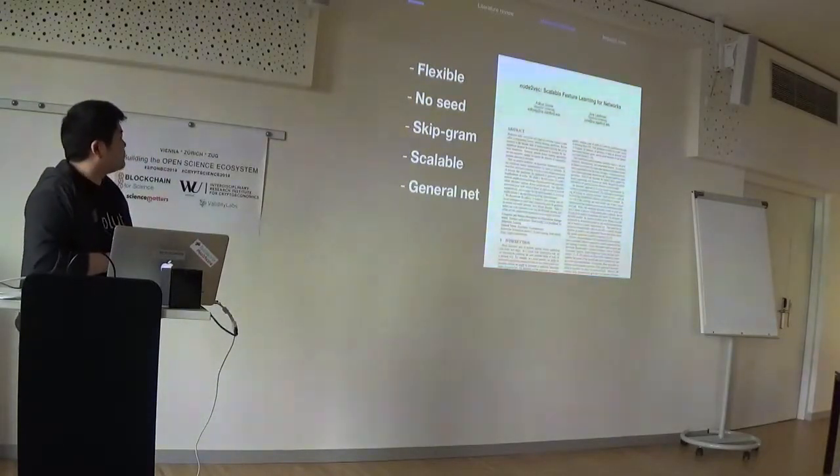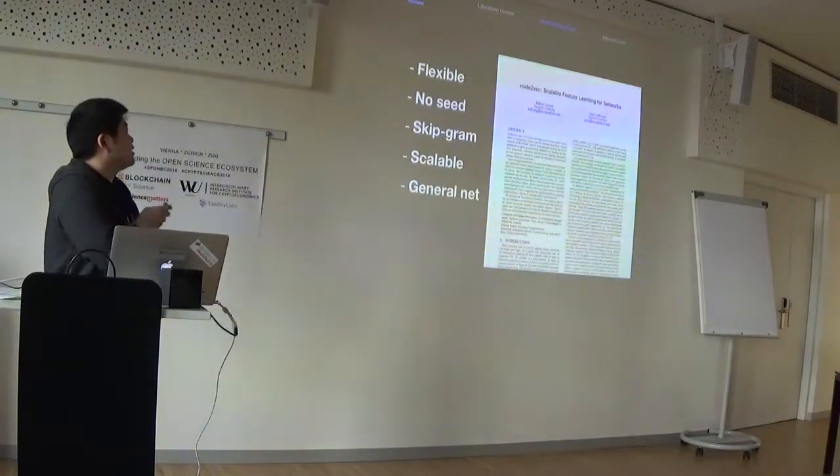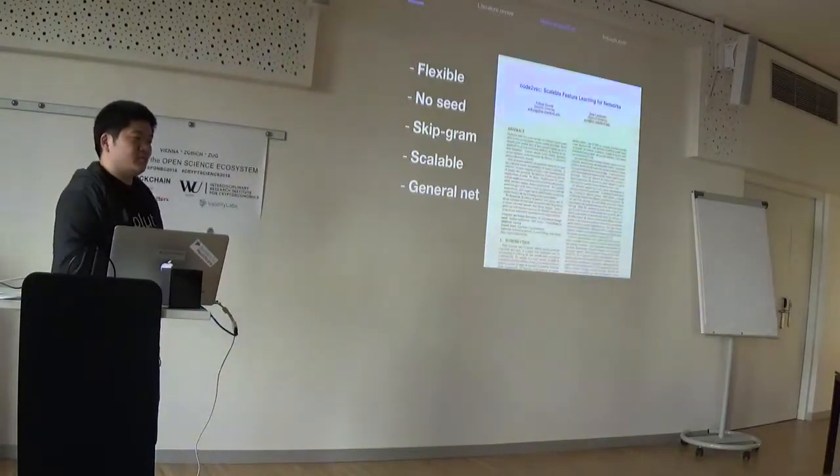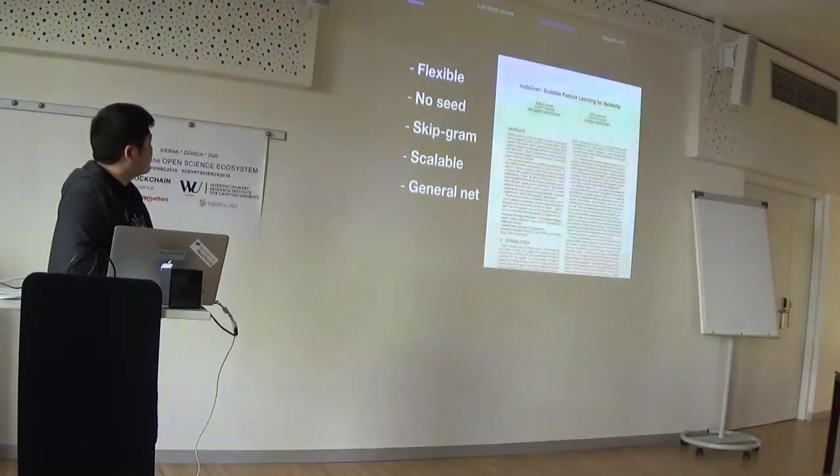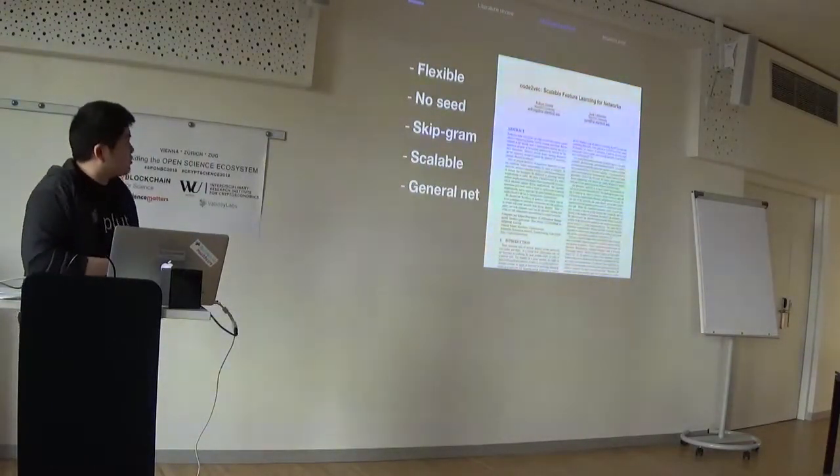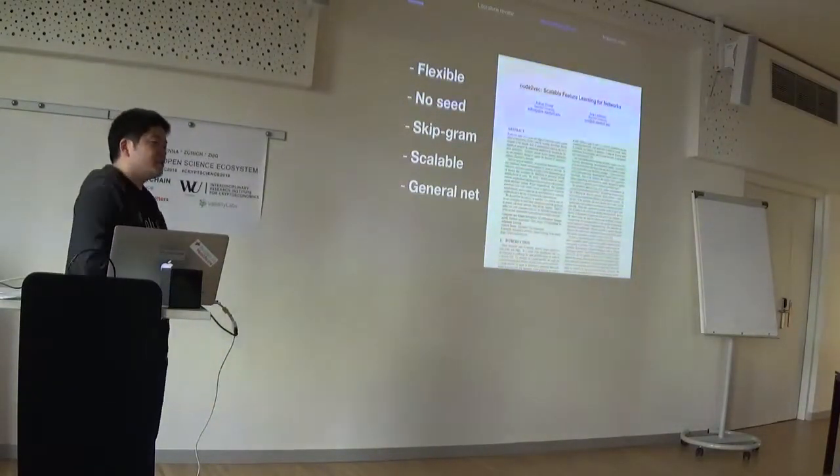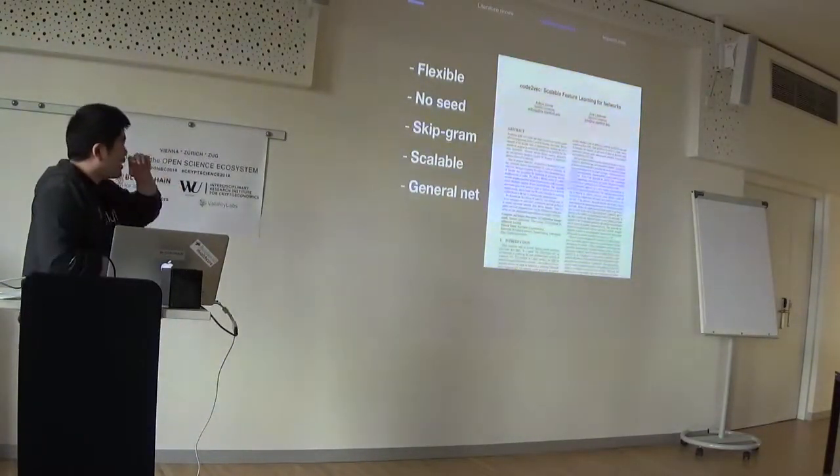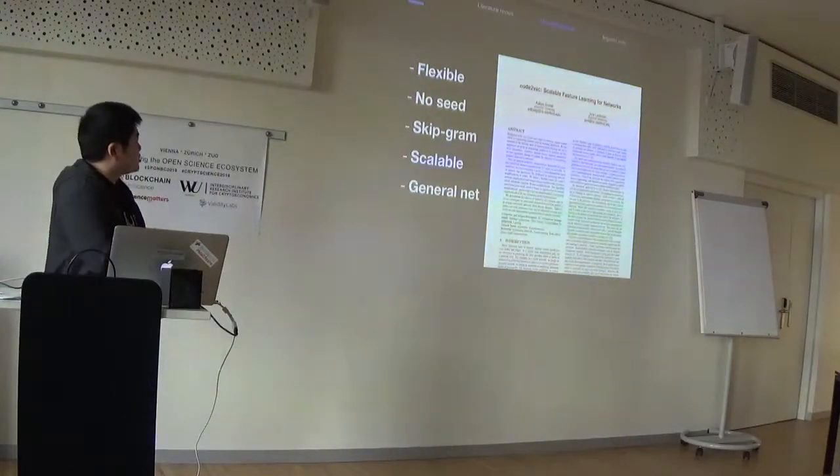Our proposed methodology is node2vec algorithm, which was devised by two Stanford researchers two years ago. The core contribution from node2vec was that it has a flexible notion of neighborhood—the adjacency of nodes in the citation network—and they don't need a seed in the first stage. For ordinary network analysis, they require a seed input to get a good modeling, but node2vec doesn't require a seed in the beginning.